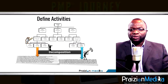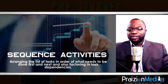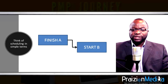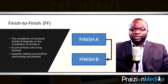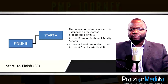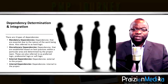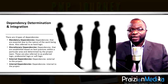Process 10: Sequence activities. This is where we employ start-to-start, finish-to-finish, or start-to-finish relationships to join those activities. Every predecessor should be linked to a successor, except at the end of a project. This is also where we discuss mandatory dependencies, discretionary dependencies, internal dependencies, and external dependencies.